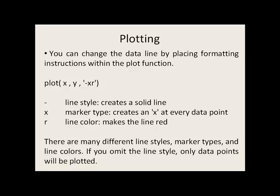You can change the data line by placing formatting instructions within the plot function after the x and y values, and you put these within single quotes. So in this case, we say dash x r. The dash is the line style. It's going to create a solid line if there's just a single dash. Marker type: if I put x for the marker type, that will create an x at every data point. If I say r for the line color, that will make the line red.